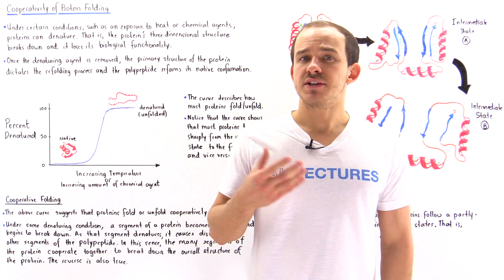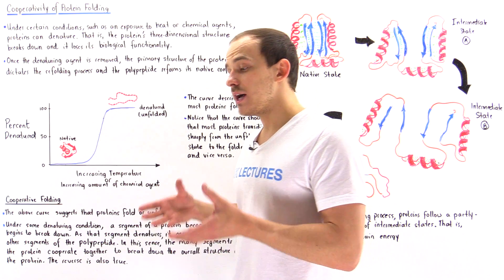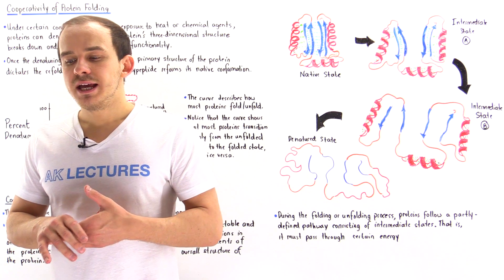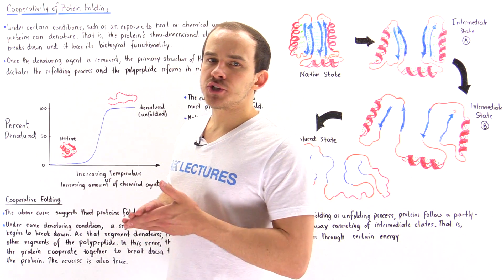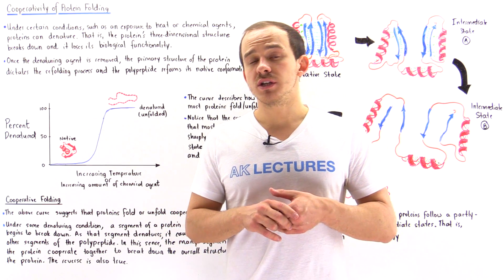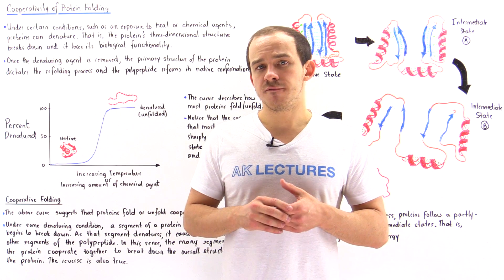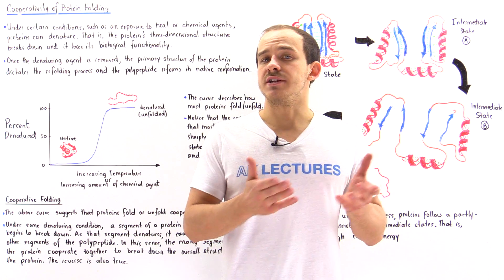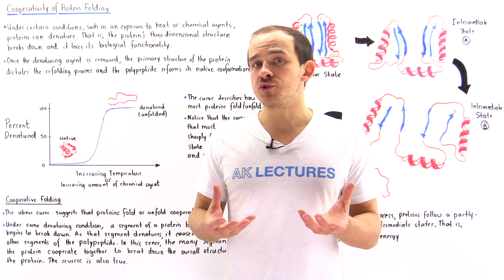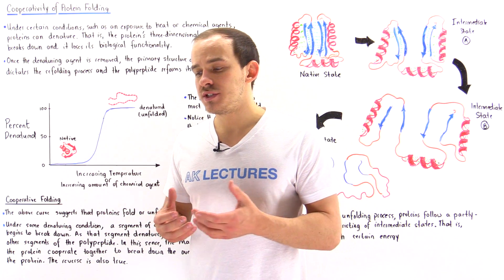Suppose we have a solution containing a polypeptide that exists in its fully functional three-dimensional tertiary state. If we increase the temperature of the solution or add some type of denaturing chemical agent, that protein will begin to unfold, losing its tertiary structure followed by its secondary structure, eventually denaturing into a non-functional, biologically inactive protein.